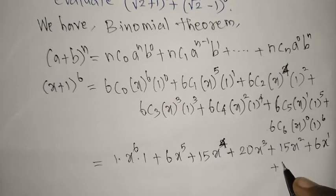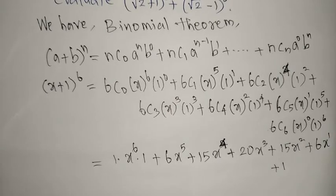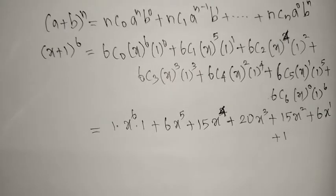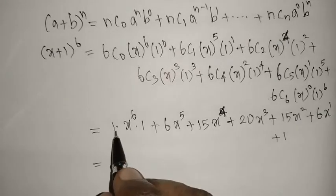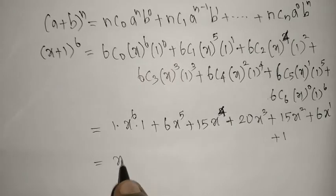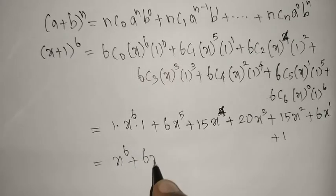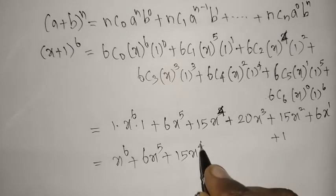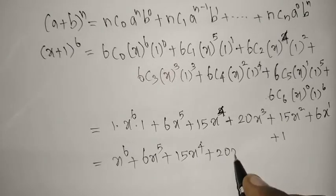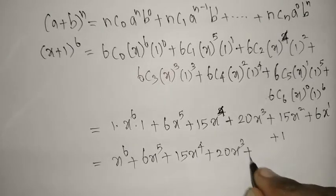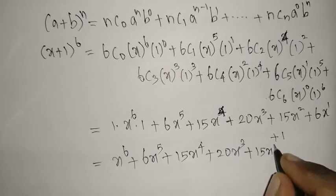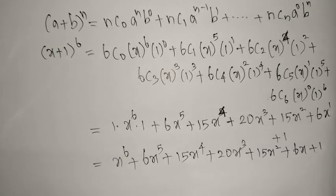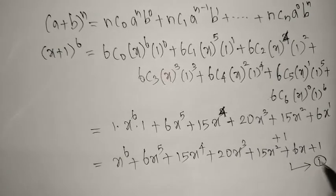The last term: 6C6 = 1, x⁰ = 1, 1⁶ = 1, so it contributes 1. Therefore (x+1)⁶ = x⁶ + 6x⁵ + 15x⁴ + 20x³ + 15x² + 6x + 1. This is Answer 1.